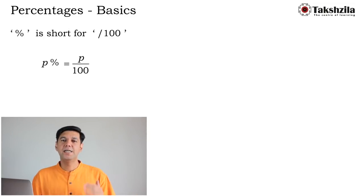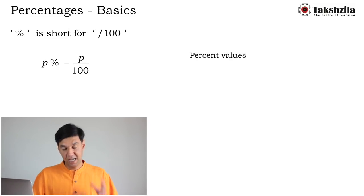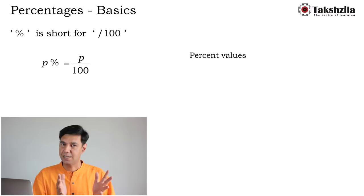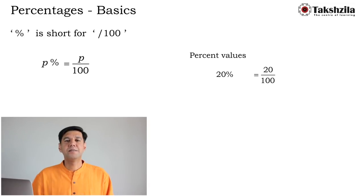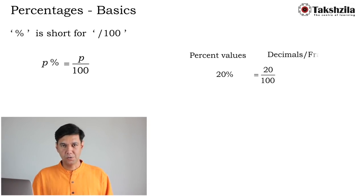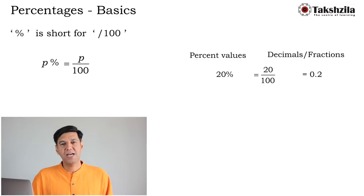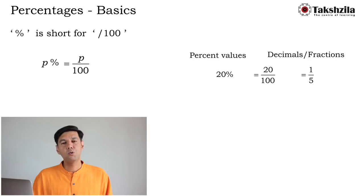Let's work out a few percentage values — they are just numbers represented differently. For example, 20% is the same as 20/100, which in decimal form is 0.2. We'll rarely use decimals; fractional values are far more important. 20/100 reduced to a fraction is 1/5, so 20% = 1/5. Percentages can also be more than 100 — for example, 125%.